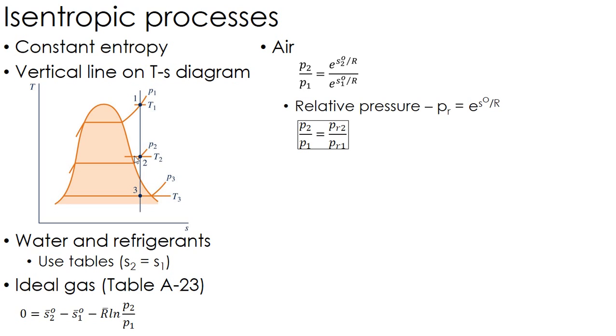That is what we call our relative pressure, which really has no physical meaning, but it makes using table A22 for air much simpler because there are two extra columns. One is this relative pressure column.